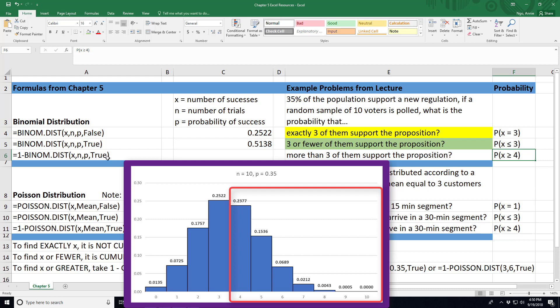That means I'm going to use the complement rule in that if I want 4 or more, that means I don't want the probability of 3 or less.